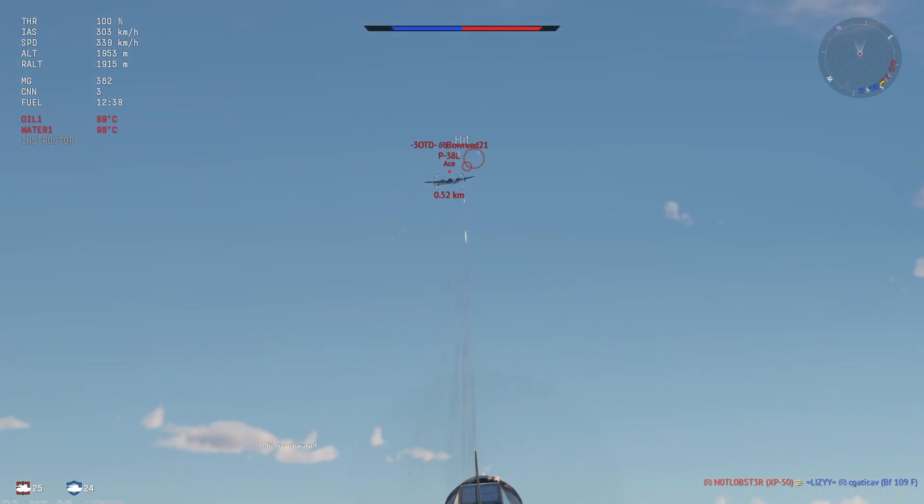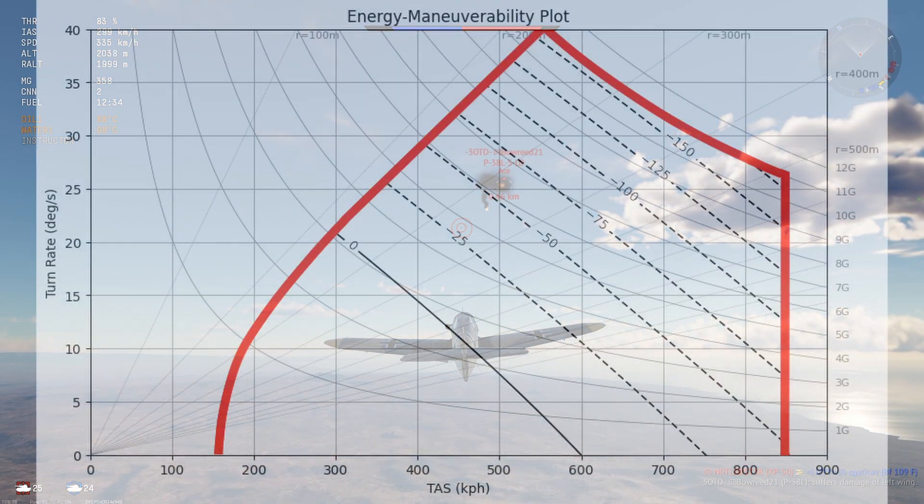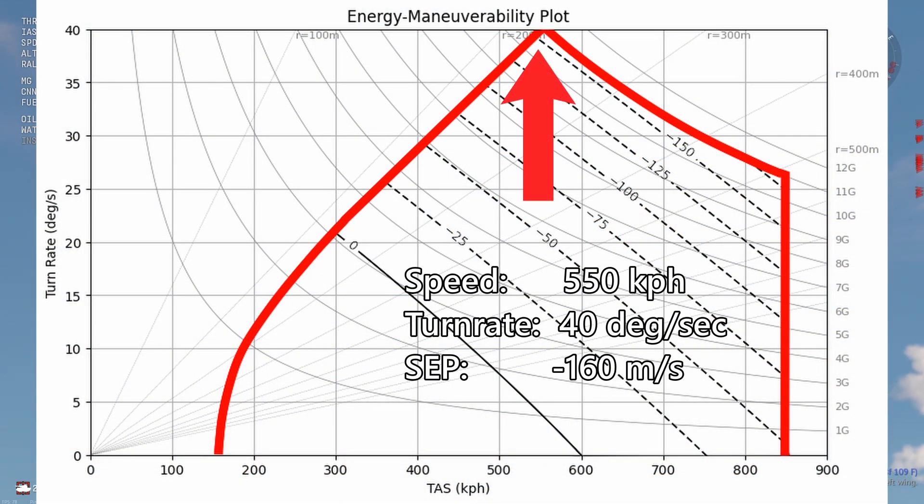Now that we know what specific excess power is, how do we use it? Well, on our energy maneuverability diagram, let's take a look at the maximum instantaneous turn again. Because we're turning so hard and at such high speed, we'll be generating a lot of drag, meaning that our specific excess power will be very negative.